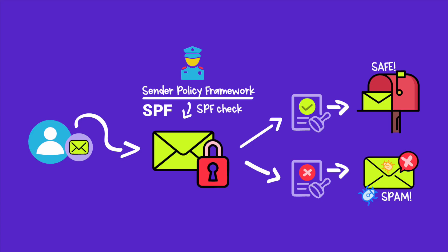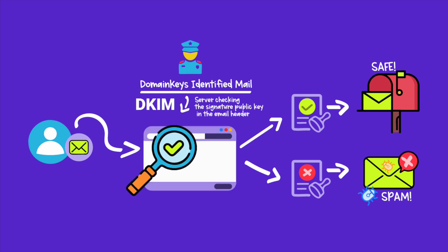SPF stands for Sender Policy Framework. This protocol specifies which servers can send emails from your domain and helps block unauthorized servers from sending fake emails pretending to be from your company. DKIM stands for DomainKeys Identified Mail. DKIM adds a unique digital signature to each email to verify if it's really coming from your domain.